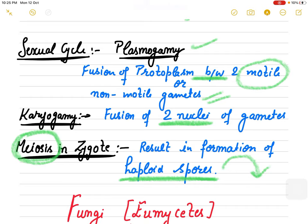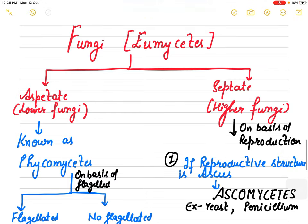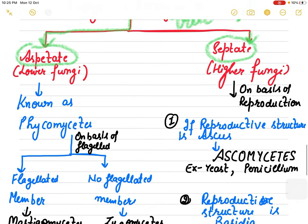True fungi is known as Eomycetes and Eomycetes can be further divided into lower fungi group or higher fungi group. Lower fungi are aseptic - no septum is present, and higher fungi have septa.